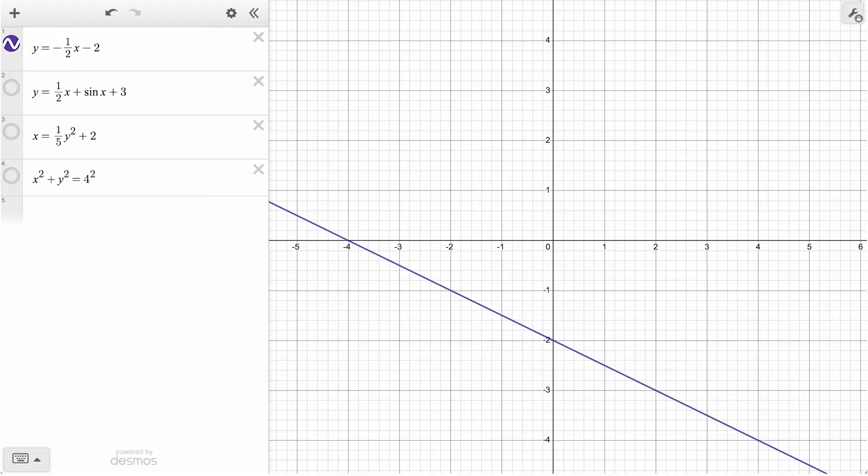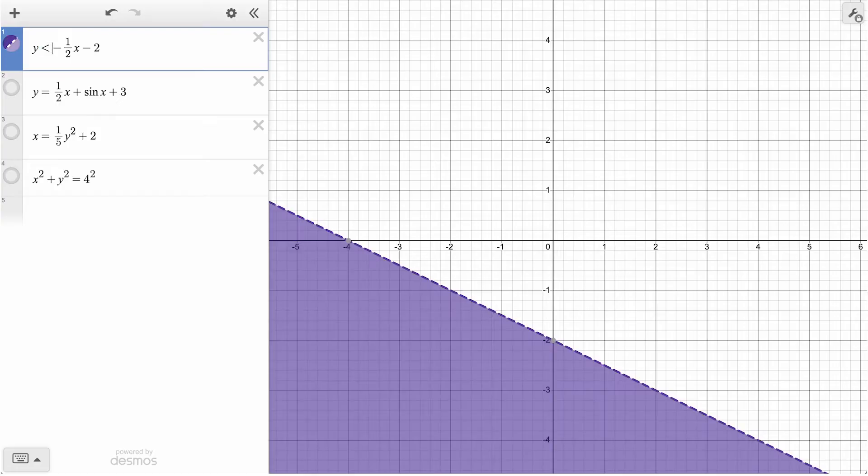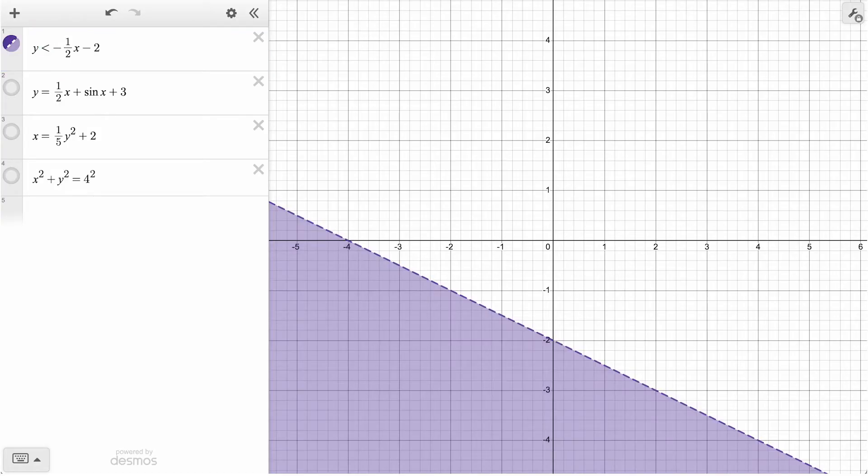Currently, this line represents only the x and y coordinates that satisfy this equation exactly, where the y values are equal to negative one-half times the x value minus 2. By changing this to a less than symbol, we now see the shaded region containing all the points whose y values are less than that expression of x values.